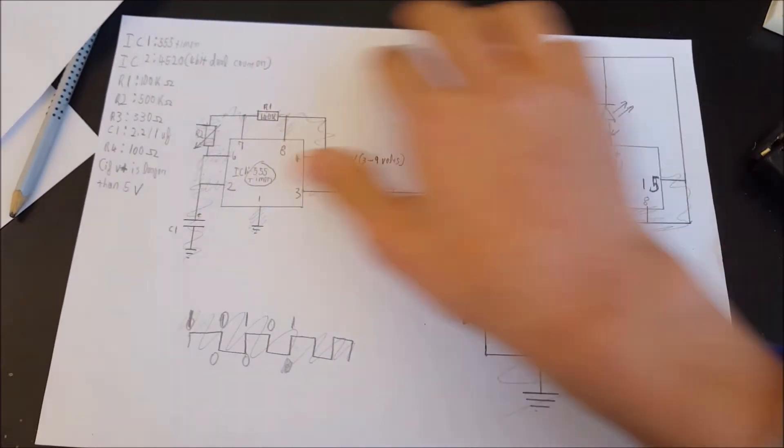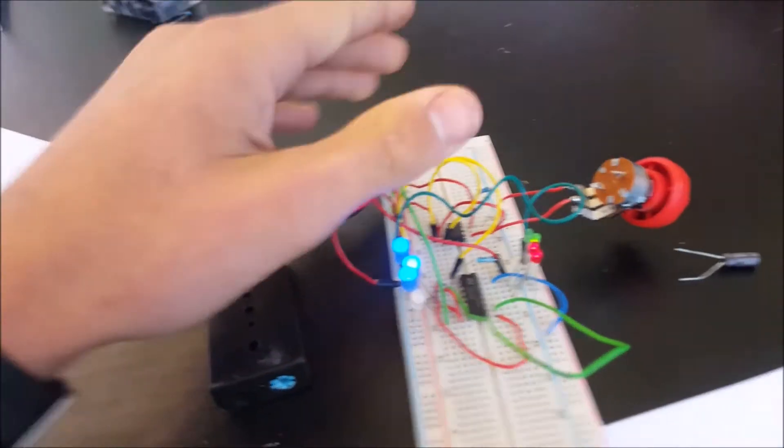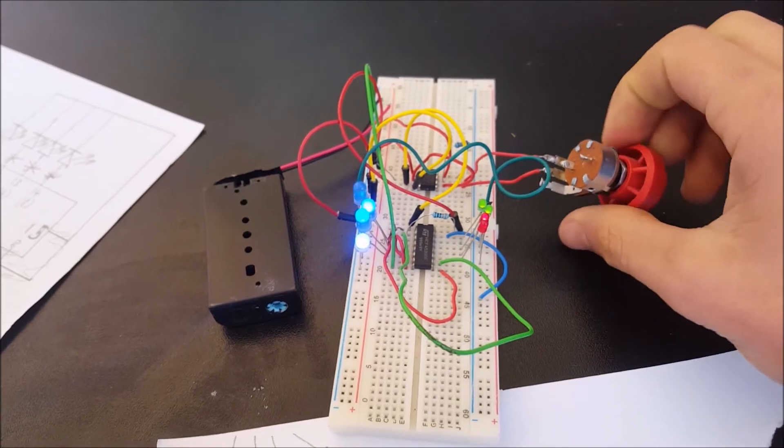So if you follow the full schematic here and you connect the 2-bit counters together, you get 2-bit counters as you can see. And I can control the speed using the potentiometer.